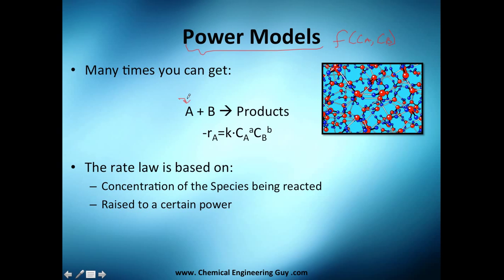Many times we have this reaction: A plus B will give you a product here. Now we've got our rate of reaction here equals K times this concentration to the power of A and this concentration to the power of B.